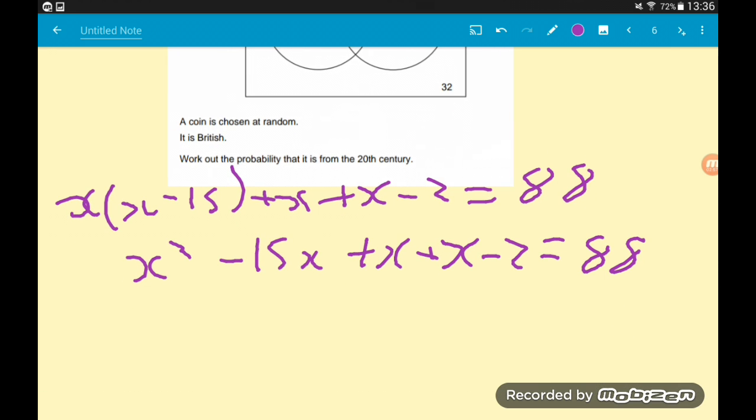Let's now simplify the left hand side. We've got x squared, and minus 15x plus x plus x is minus 13x, and then we've got minus 2 equals 88.